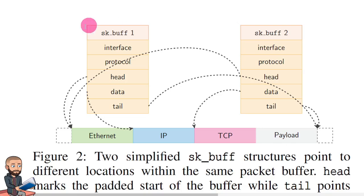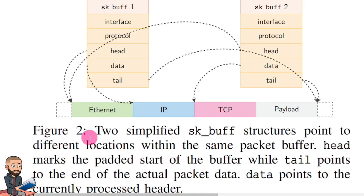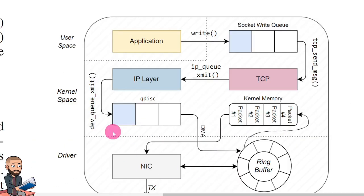I'm not sure where to start here, so buff 2 has data — does it go like this and then go to tail? Maybe their words will clarify. Figure 2: two simplified skbuf structures point to different locations within the same packet buffer. Head marks the padded start of the buffer while tail points to the end of the actual packet data. Data points to the currently processed header.